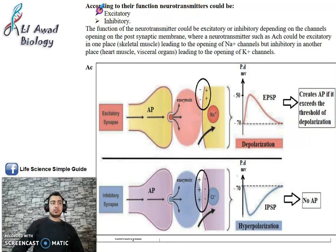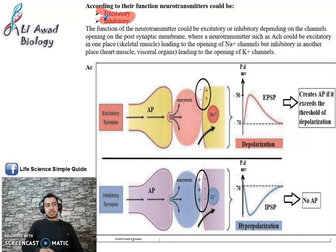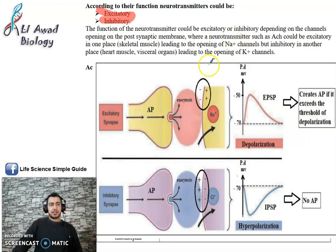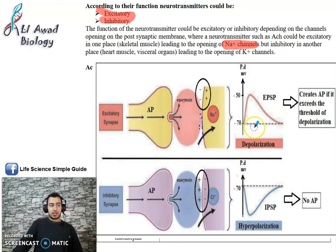Neurotransmitters according to function are excitatory or inhibitory, according to the synapse that they are in. When the neurotransmitter is excitatory, simply, when the nervous message arrives in the excitatory synapse and the neurotransmitter binds to its receptors, it leads to the opening of Na+ channels. When Na+ channels open, Na+ enters from the extracellular to the intracellular medium, and this leads to EPSP or depolarization. If it exceeds the threshold, it creates an action potential to +30.